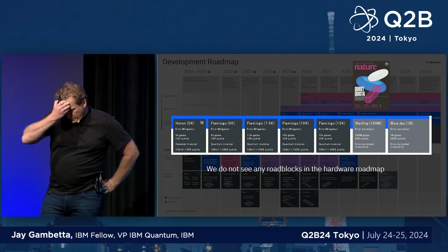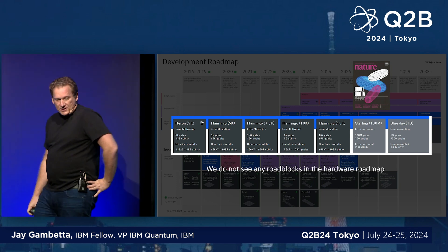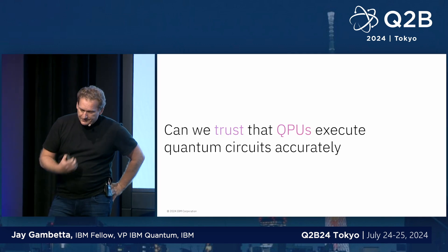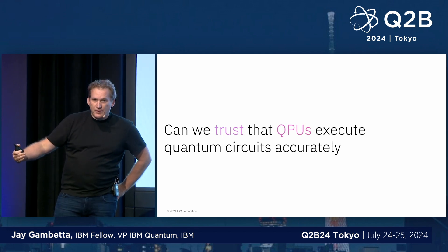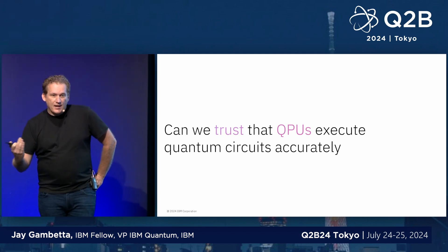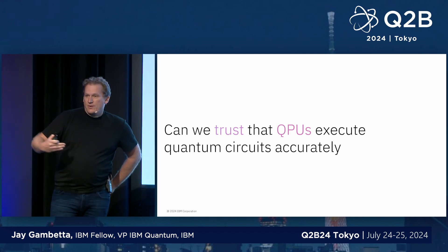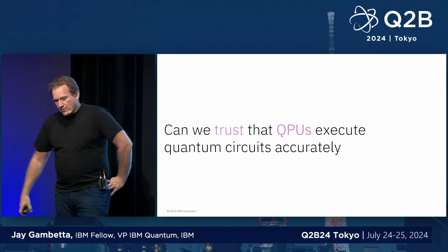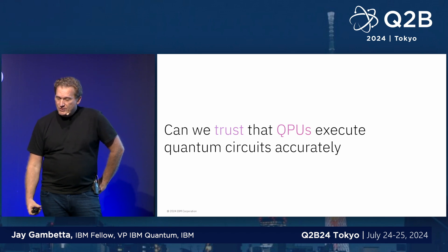From our perspective, we do not see any roadblocks from the hardware. In a longer talk I'd go into much more detail, but today I want to talk about something different. When we start to think about how we're going to use a quantum computer, the first question we often ask is: can you actually trust the output? I think we've got to start to work out how we get what I call rigorous heuristics — rigorous trust.